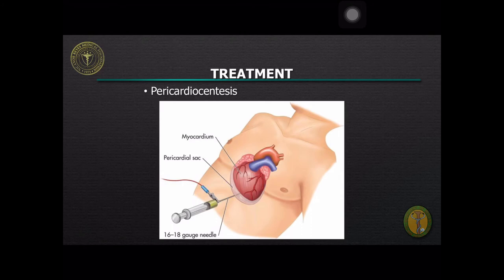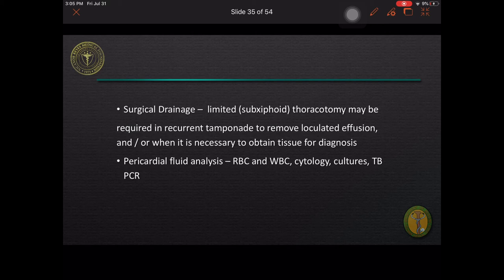Intrapericardial pressure, if possible, should be measured before fluid is withdrawn and pericardial fluid drained as completely as possible. A small multi-hole catheter may be advanced over the needle and inserted into the pericardial cavity, which is left in place if fluid reaccumulates. Surgical drainage through a limited sub-xiphoid thoracotomy may be required in recurrent tamponade to remove loculated effusion and/or when it is necessary to obtain tissue for diagnosis. Pericardial fluid should be analyzed for red blood cells, white blood cells, cytology, cultures, and TB-PCR.